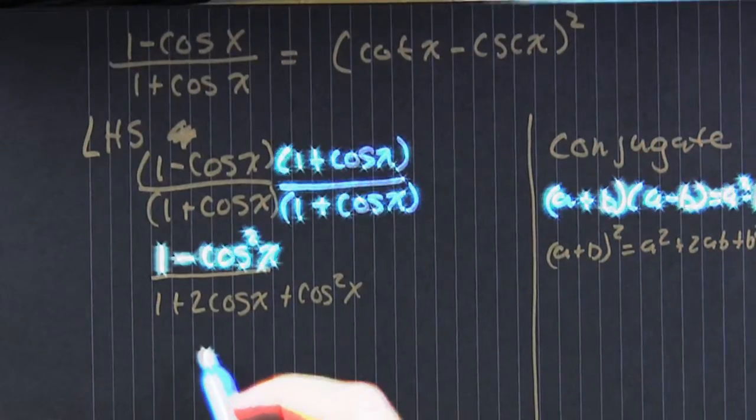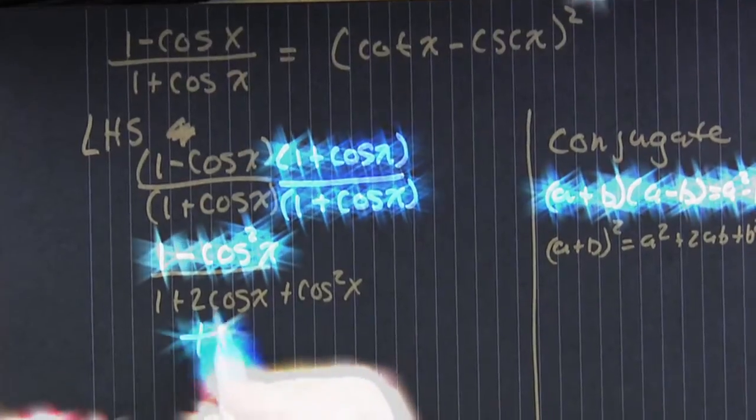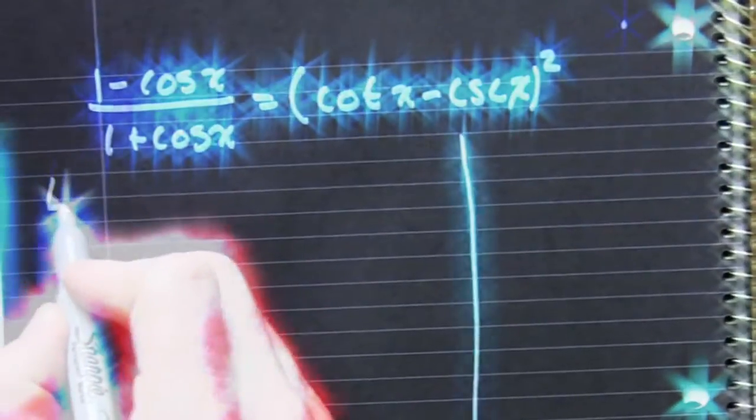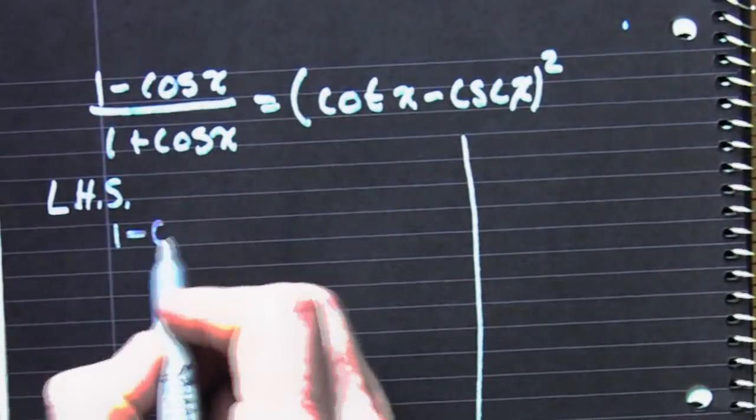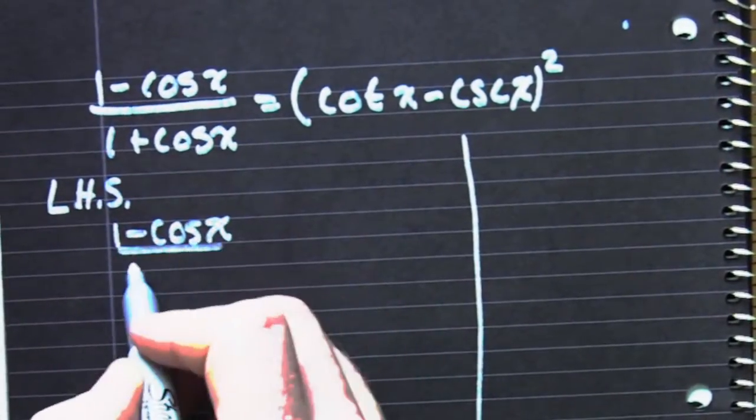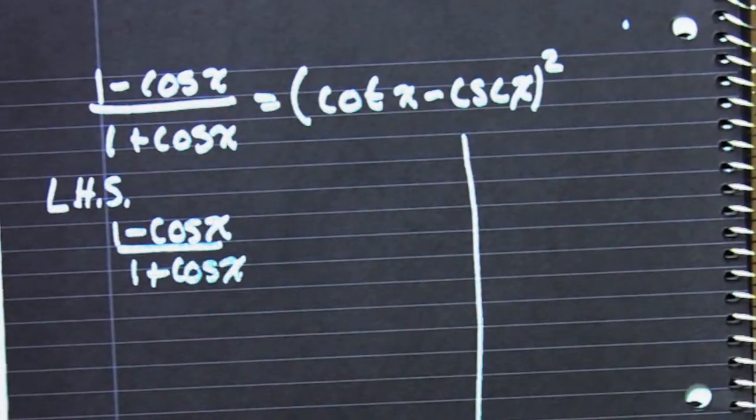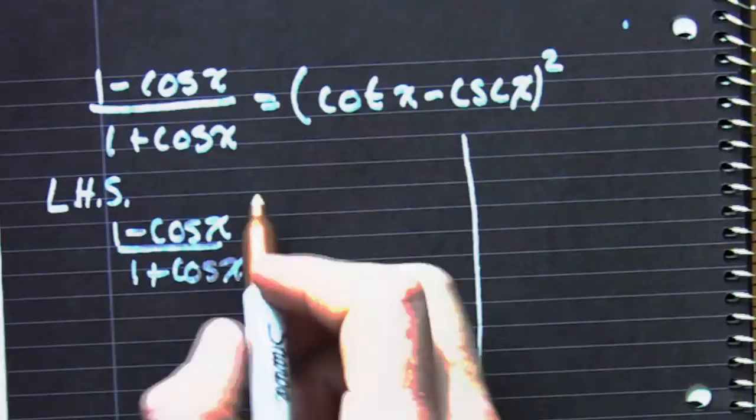I don't know. I'm trying to get that right-hand side. This is trash. Let's start over. That's a legitimate strategy. This time, let's multiply top and bottom by the conjugate of the denominator. Go ahead.